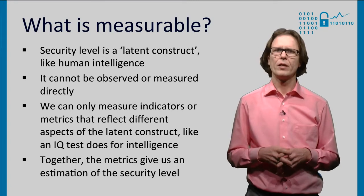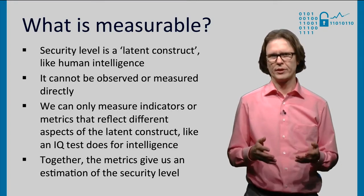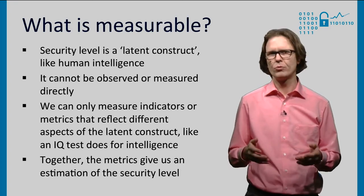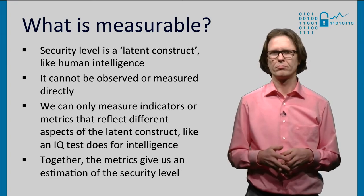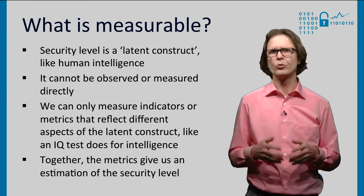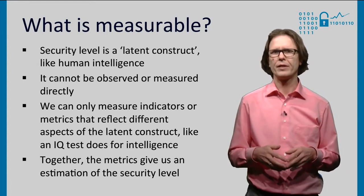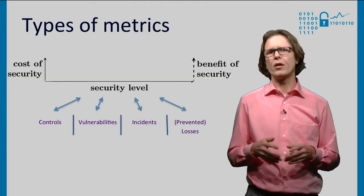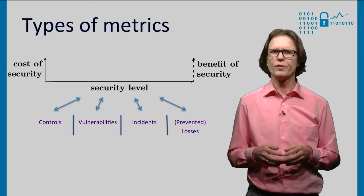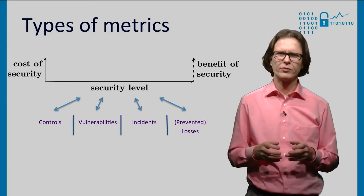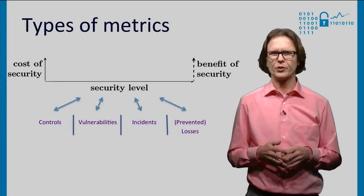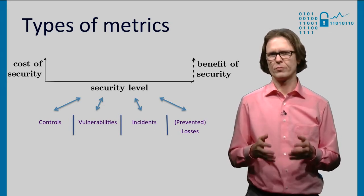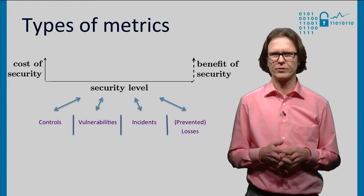It's the same for security. We can measure indicators or metrics that reflect different aspects of the security level. They all have their own strengths and weaknesses. Like an IQ test, you ideally want to include all these aspects when developing an estimation of the security level. We can distinguish four types of security metrics: metrics based on controls, on vulnerabilities, on incidents, and on prevented losses.